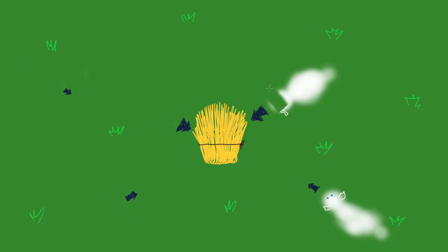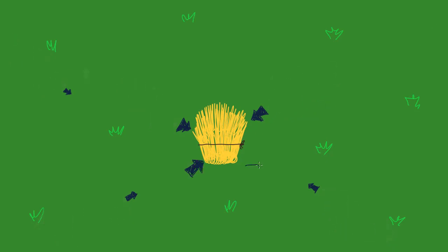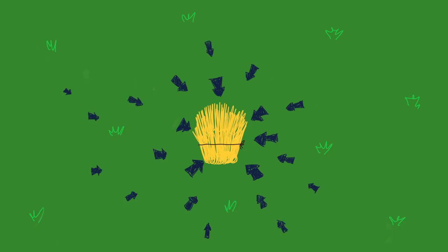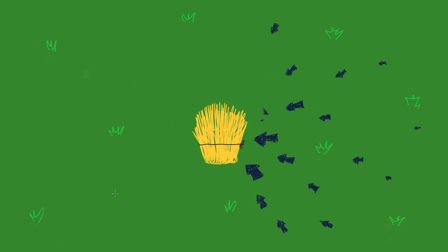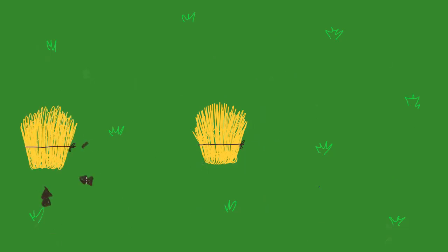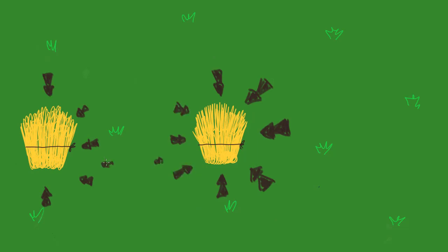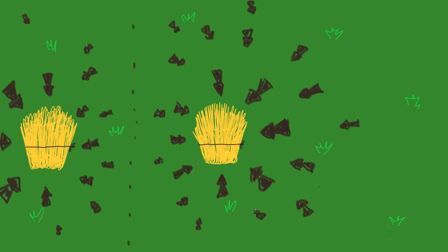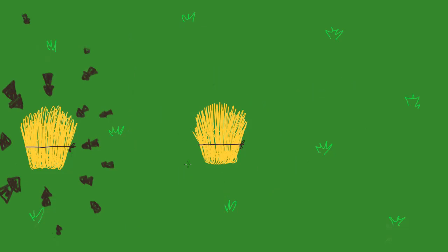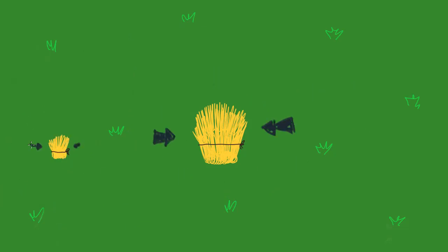Now, let's take away the sheep and instead imagine how much a sheep would want the hay at each point on our field. Closer to the hay, as we saw earlier, the sheep will want the hay more. If we include a second hay bale, we can imagine that sheep closer to the second hay bale are more likely to want to move toward that hay bale, unless the first hay bale is much bigger and juicier.